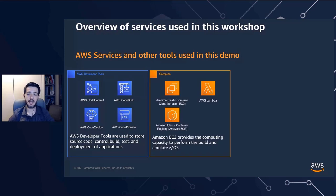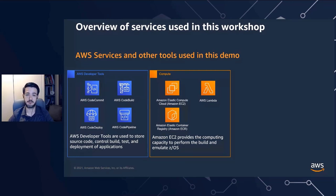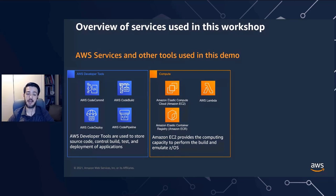In the compute services category, we have Amazon EC2 that provides flexible compute capacity for our programs and systems to run. AWS Lambda allows us to run code without worrying about server instances — run scripts and only pay for the time we consume resources. Third, Amazon ECR (Elastic Container Registry) provides a simple way to store, manage, and deploy container images used for building and testing.